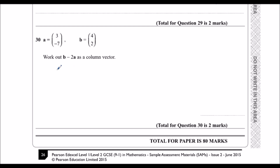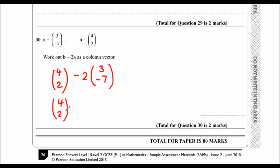So we've got B, which is (4, 2), take away 2A. So 2 times (3, -7). We write out (4, 2) and then take away — if I double this — (6, -14). So it's 4 minus 6,